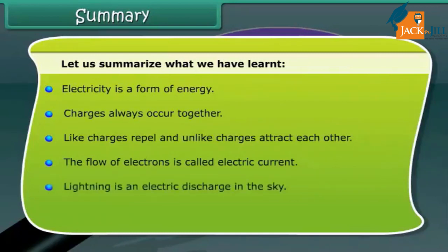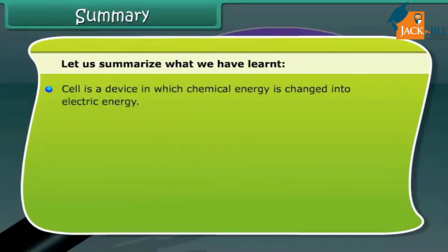Lightning is an electric discharge in the sky. Cells are sources of electric current. A cell is a device in which chemical energy is changed into electric energy.